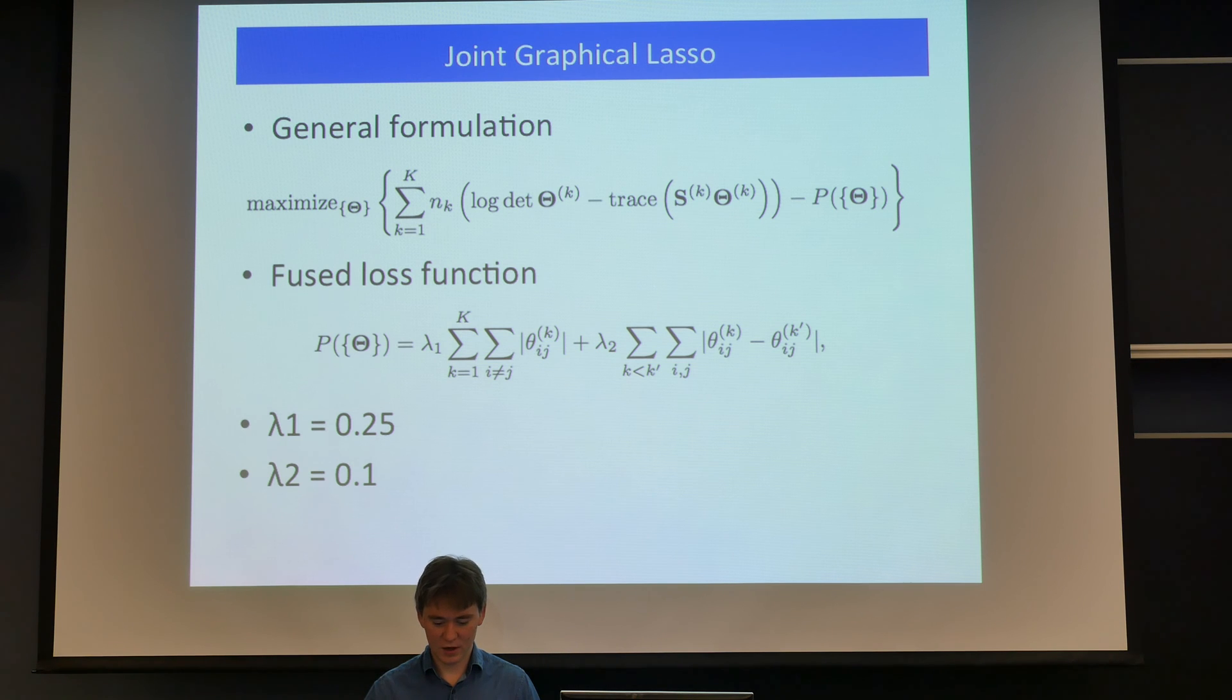So we used joint graphical lasso with fused loss function, which has two parameters, lambda 1 and lambda 2. Higher is lambda 1, the more sparse will be the matrices, and higher is lambda 2, more similar will be these estimations.